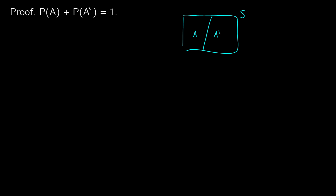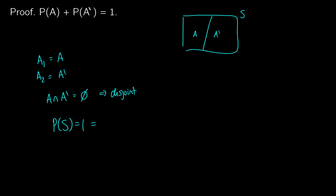Using axiom three, we let A1 be A and A2 be A-bar. We know the intersection of these is nothing — there's nothing in common between them — so they are disjoint events. We also know that the probability of the entire sample space equals one, and because these disjoint events cover the entire sample space, we get that the probability of A plus the probability of not A equals one.